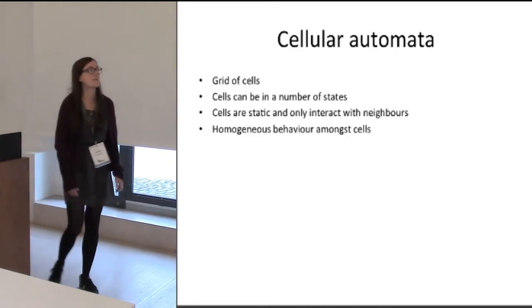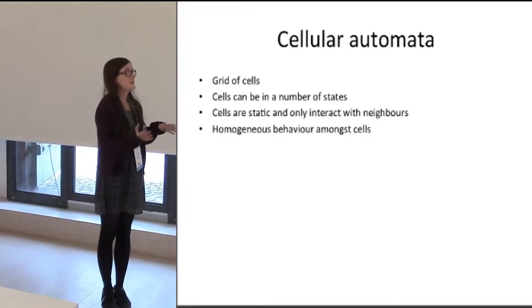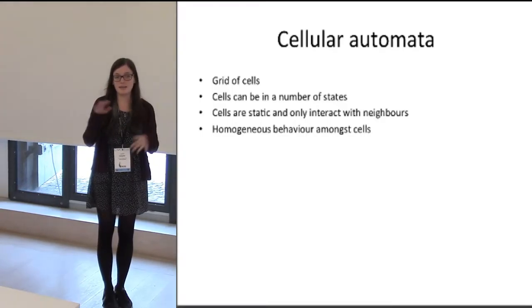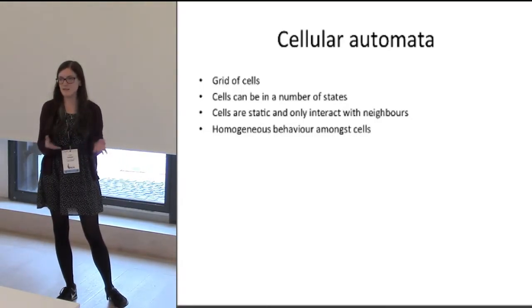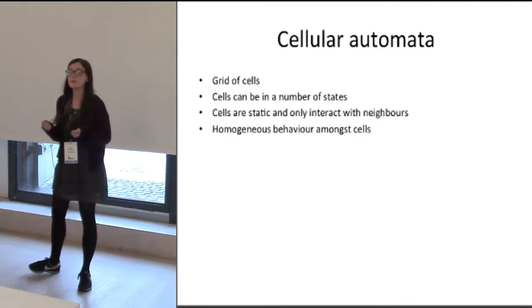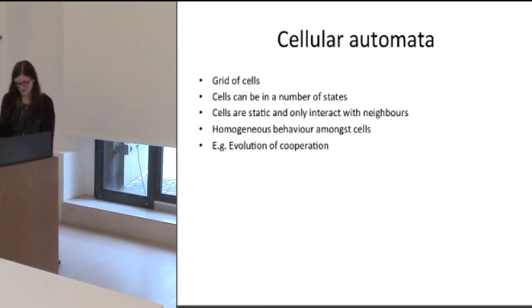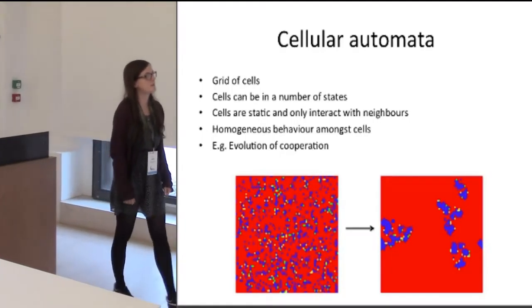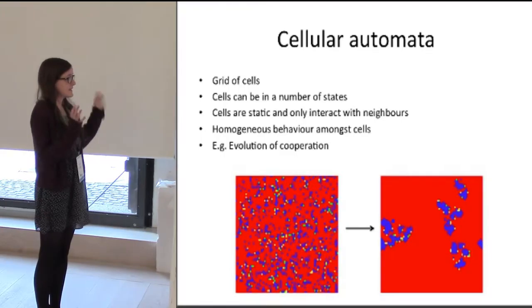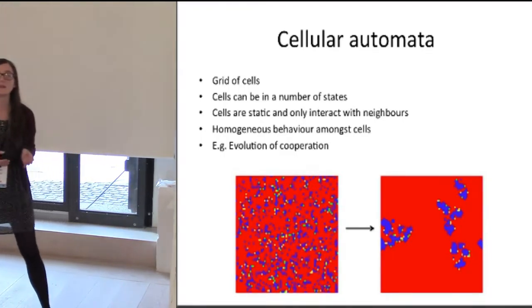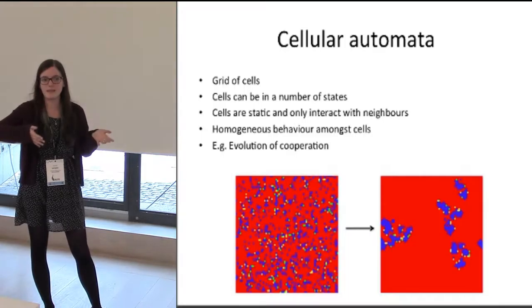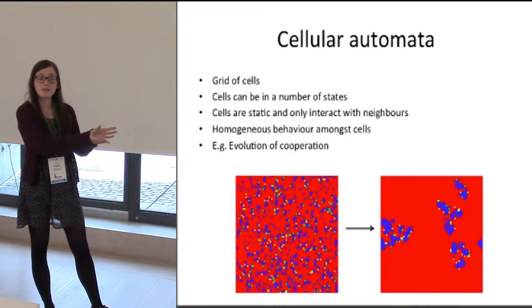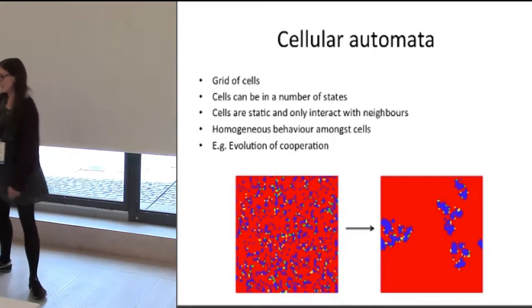In cellular automata you have a grid of cells, and they can be in a number of states, but they're static and they only interact with their neighbors. This is really different to an agent-based model where the agent can move around, it can co-occupy the same area as another agent, it can update its behavior, and also the behavior of the cells are all the same. For example, in the evolution of cooperation, on the left panel is a grid of cells where some of them are either defectors in red or cooperators in blue. They play the prisoner's dilemma with their neighbors, and you run it through various iterations and you start seeing clustering behaviors of the cooperators.